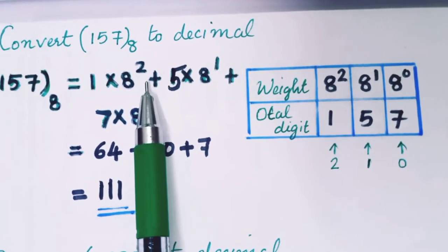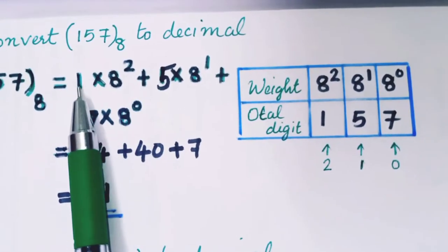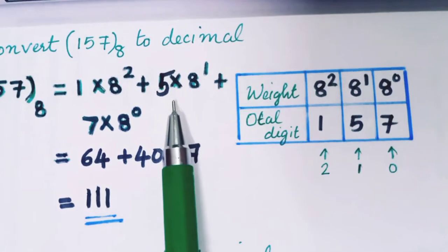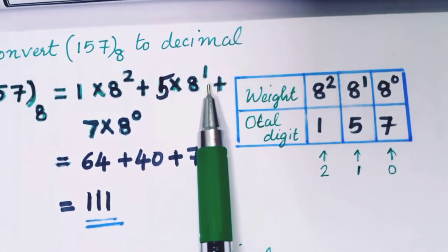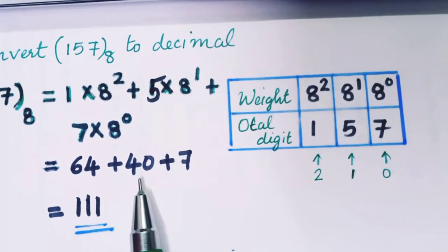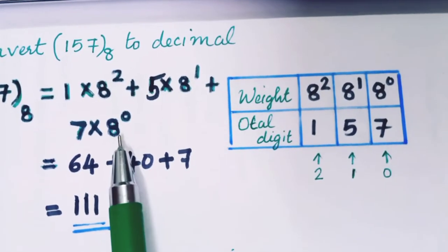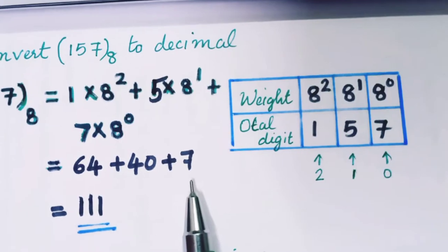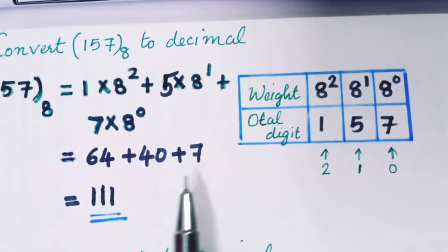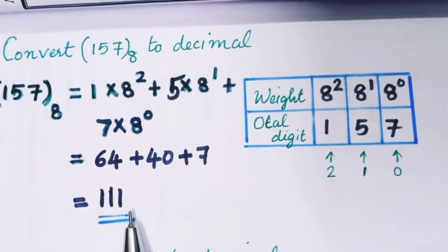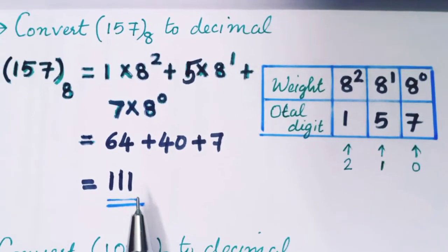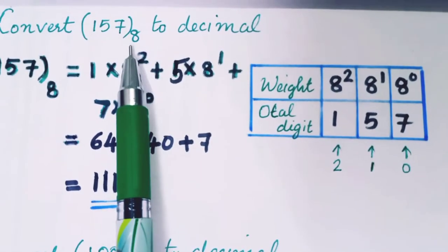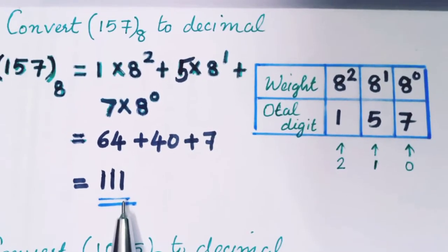8 raise to 2 is 64, so 1 × 64 = 64. 8 raise to 1 is 8, so 5 × 8 = 40. 7 × 8 raise to 0 is 7 × 1 = 7. Adding these: 64 + 40 + 7 = 111. So the octal number 157 equals the decimal number 111.